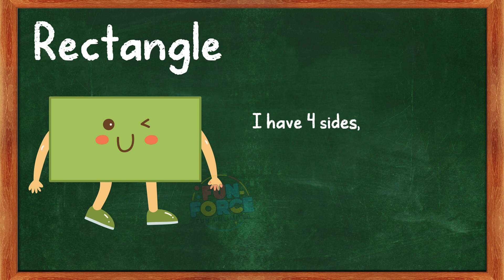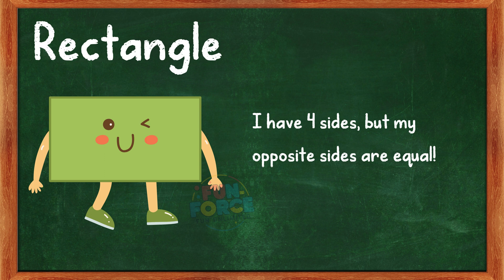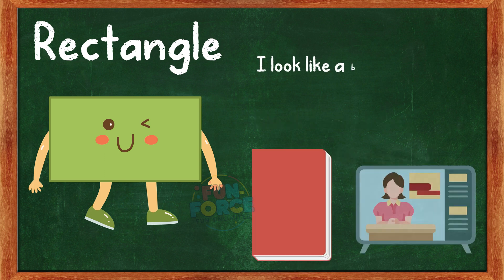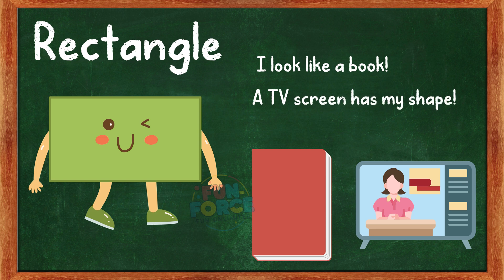I am a rectangle. I have four sides, but my opposite sides are equal. Can you guess some objects that are rectangle shaped? I look like a book. A TV screen has my shape.